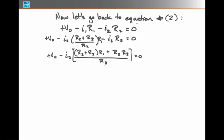This can be simplified by factoring out I2 from the last two terms and putting it all over a common denominator of R3. We have plus V0 minus I2 times this thing in the square brackets. Notice that the first term is unchanged, it's what was there before, and the second term is R2 times R3 over R3, or 1. All of this has to add to zero.